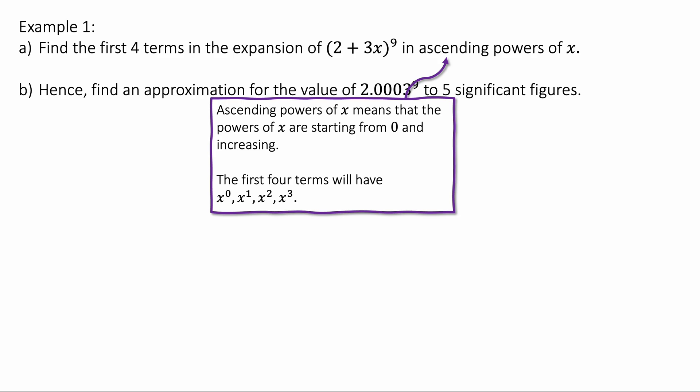Example 1 says, find the first four terms in expansion of 2 plus 3x to the power 9 in ascending powers of x. Well, ascending powers of x just means you're going from x to the power 0, x to the power 1, x to the power 2, etc. You're going up in powers of x.